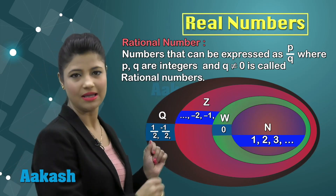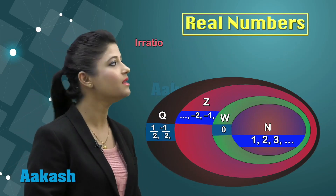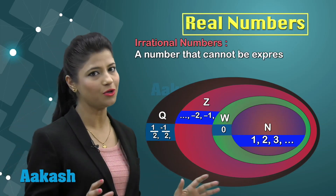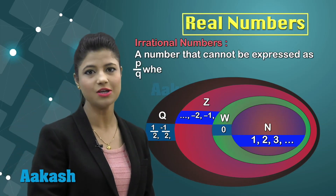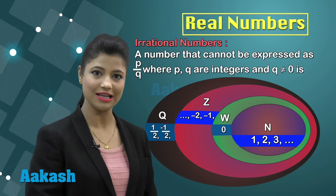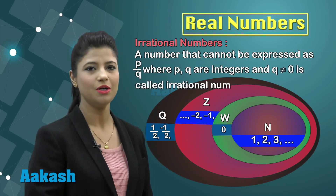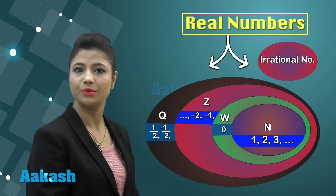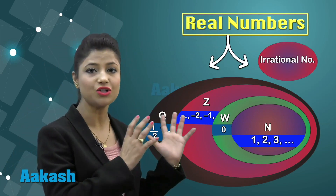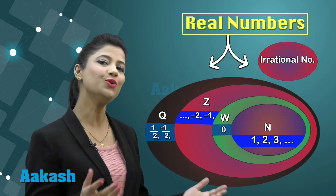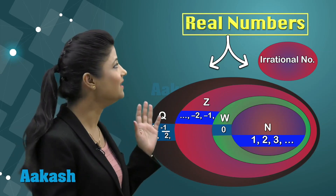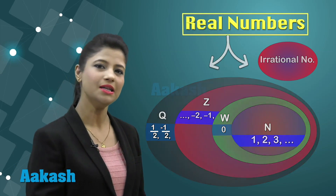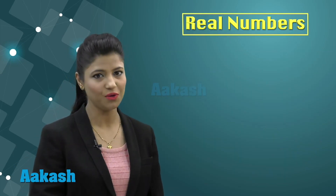Irrational numbers are those numbers that cannot be represented in terms of p/q, where p and q are integers and q is not equal to 0. When you combine the collection of rational and irrational numbers, you obtain the collection of real numbers, which we denote as capital R.